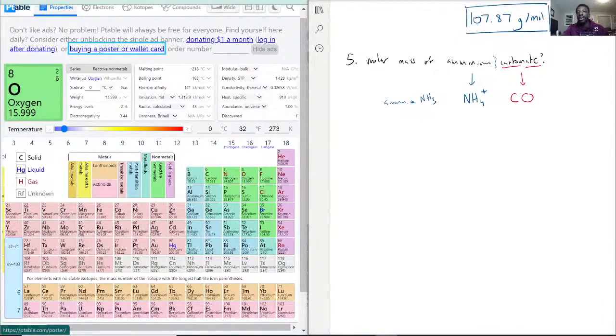And how many oxygens? This part you have to memorize. But I know that carbonate has three oxygens attached to it and it also has a minus two charge. So that would be the carbonate ion.